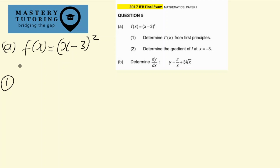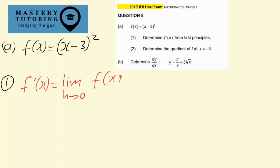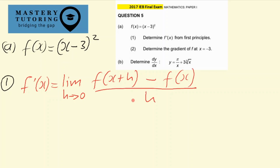Number one says determine f prime of x from first principles. So let's remember the formula for first principles: f prime of x is equal to the limit as h approaches 0 of f of x plus h, minus f of x, everything divided by h. This is the formula from first principles.